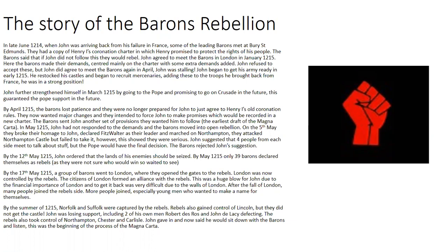John agreed to meet the barons again in April, but this was clever — he was stalling. In those three months, John began to get his army ready: he restocked castles and recruited mercenaries, adding to troops brought back from France. In March 1215 he also strengthened his position by going to the Pope and promising to go on crusade, meaning the Pope would support him if the barons moved against him.